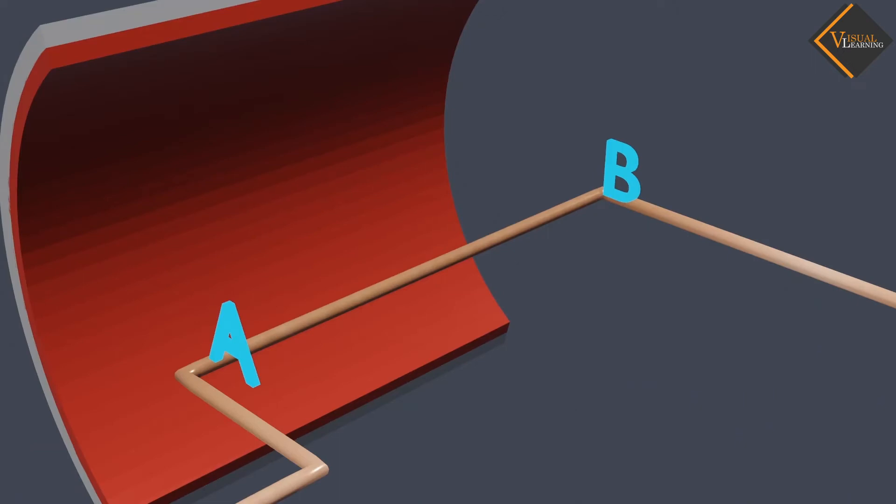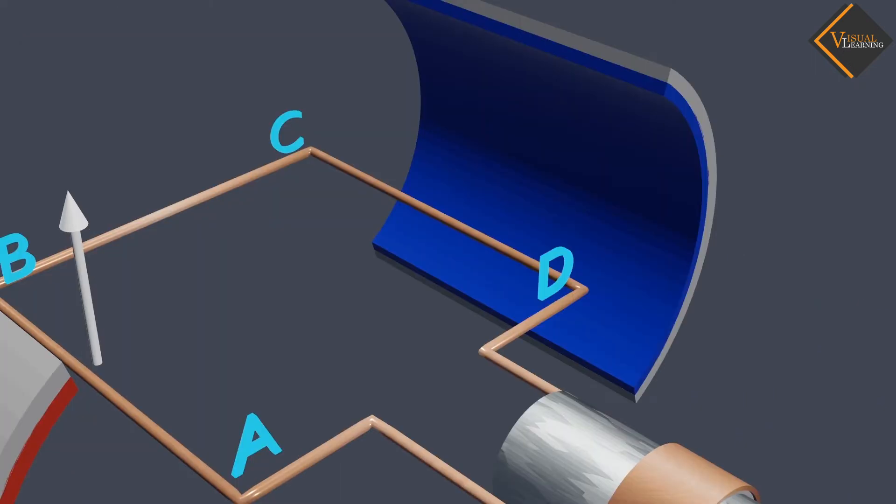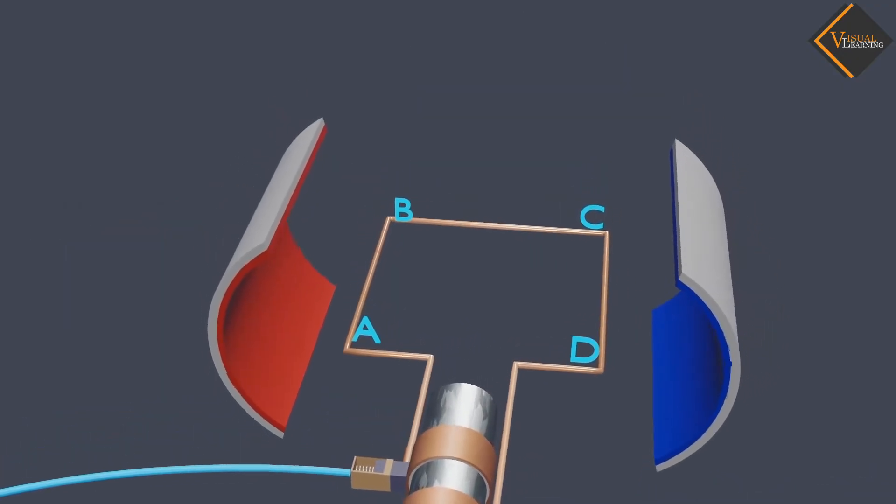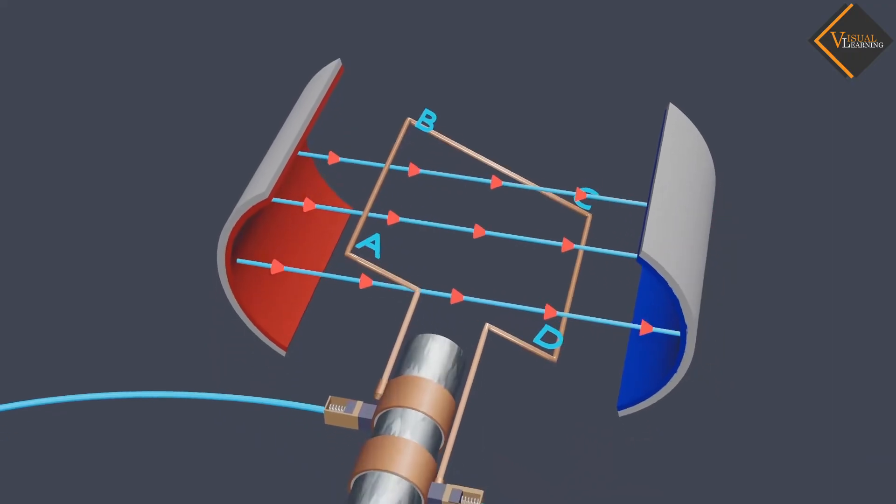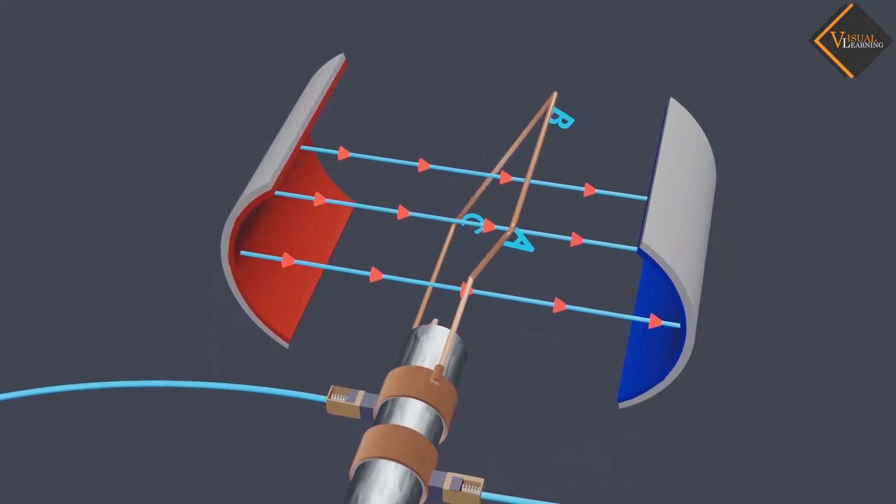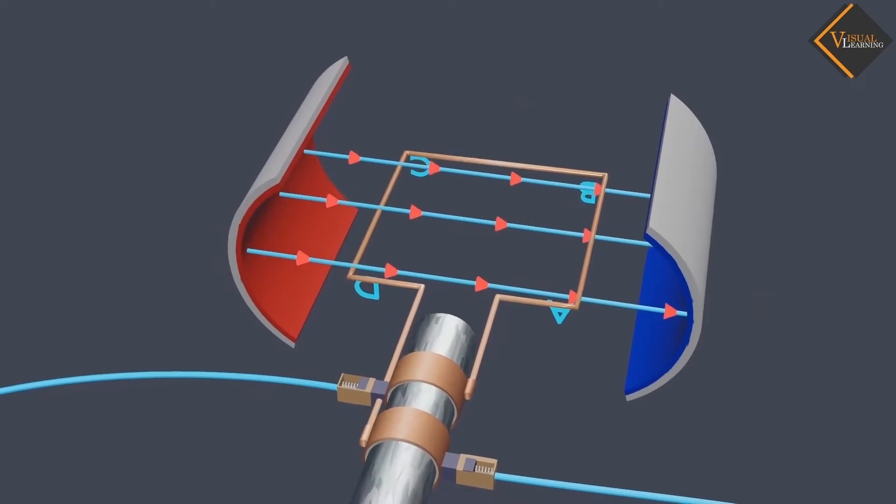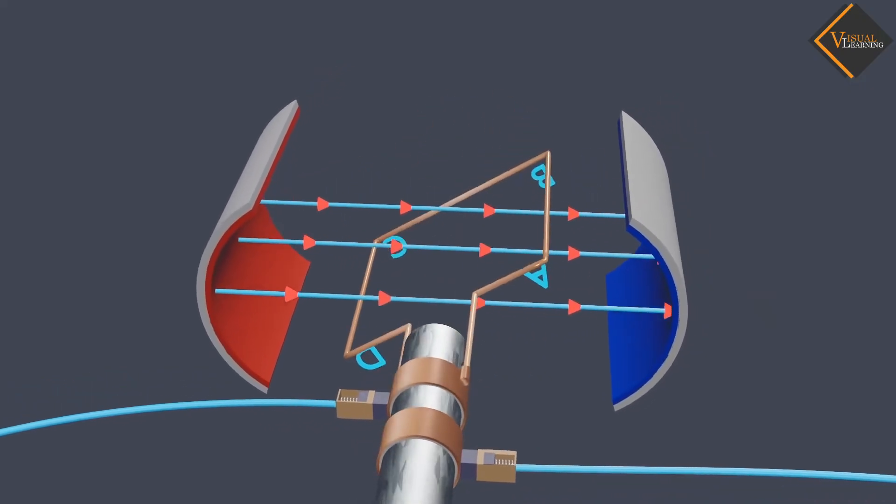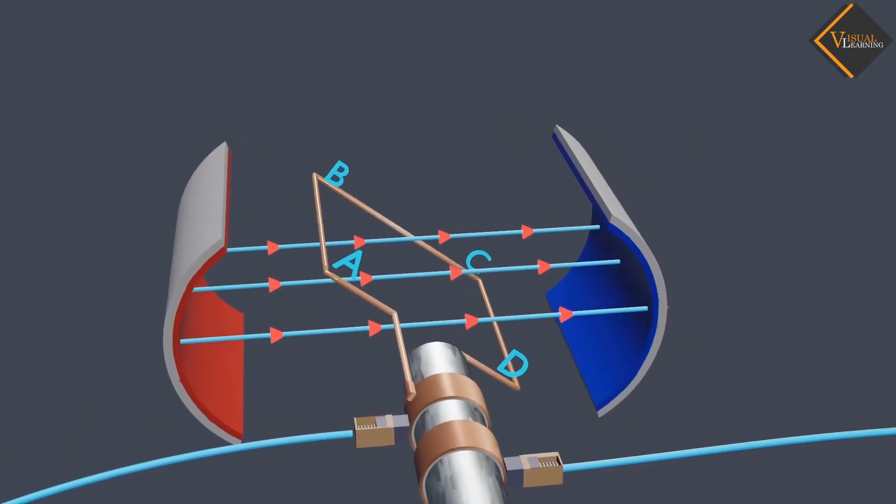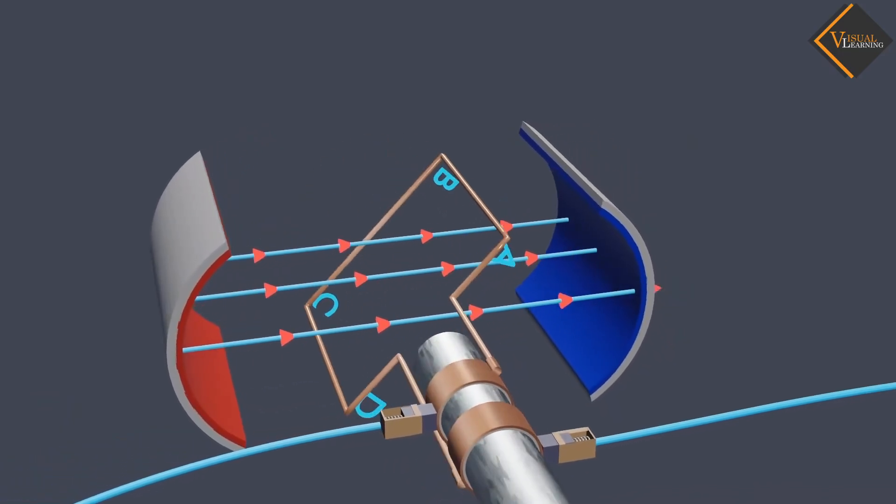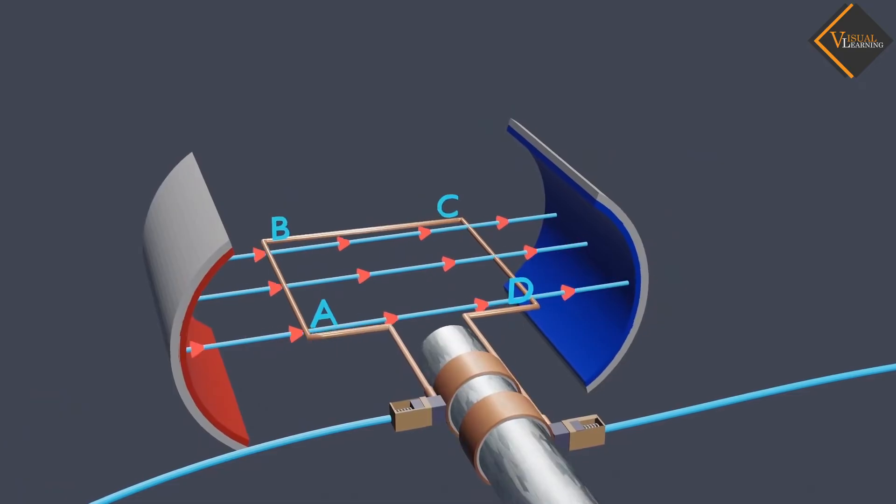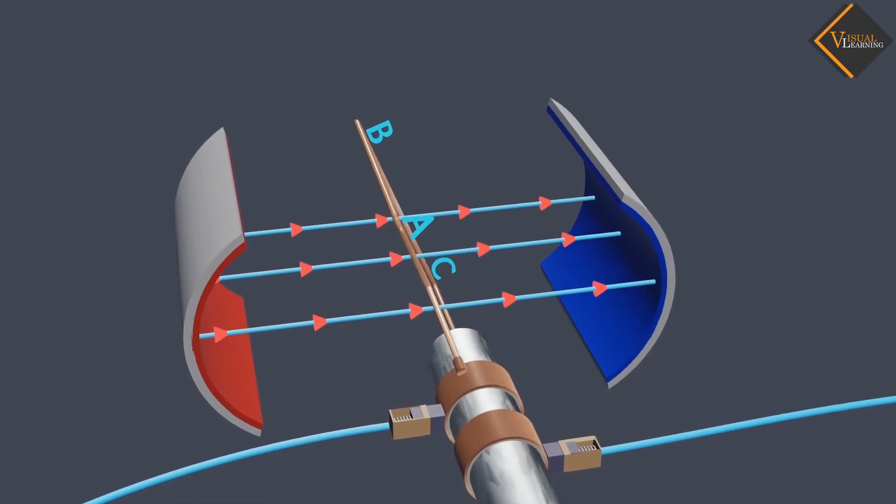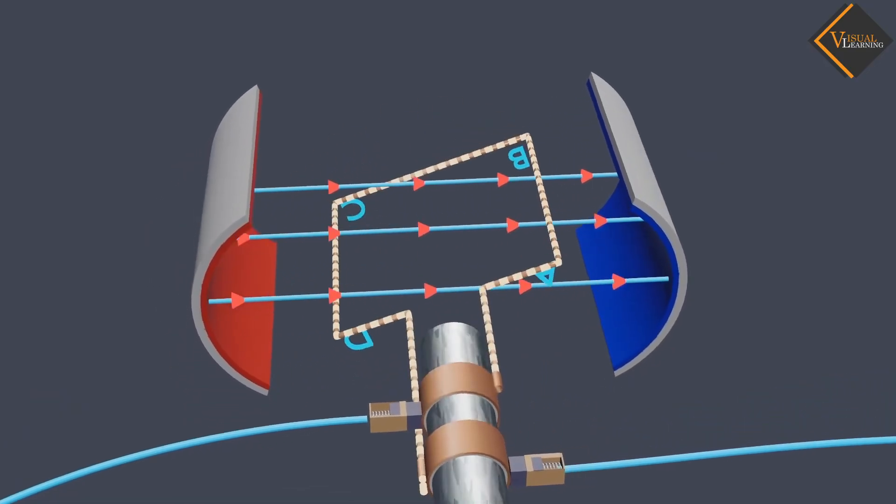The arm AB of the rectangular coil moves up and the arm CD moves down. As we can see, the rectangular coil is rotating in the magnetic field, so the magnetic field changes in the rectangular coil. Due to change in the magnetic field in rectangular coil, electromagnetic induction occurs in the coil. Whenever there is change in magnetic field, the current induces in the coil.